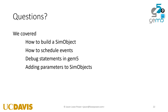GEM5 doesn't magically do anything — you have to do everything yourself. For a replacement policy, it's up to you to decide: does updating LRU information happen during a hit, requiring another event, or does it happen in the same cycle? You get to decide as a modeler how realistic or unrealistic your model is. You can have an 8MB cache that takes one cycle to access — clearly unrealistic, but you can do it.